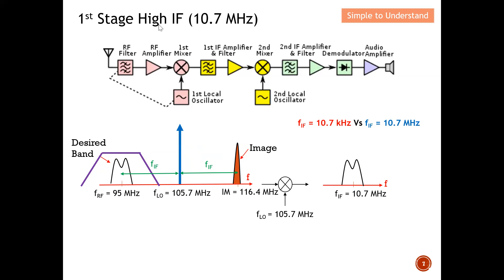With a high IF, at the output of the mixer I contain only the desired band — the image is completely rejected. Therefore, on the first stage I want to have a high IF. By having a high IF, the image is spaced further from the desired band, and the bandpass filter can clearly select the desired band. Conclusion: the first stage should have a high IF.